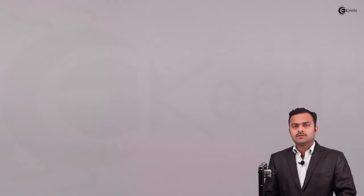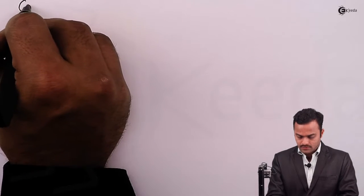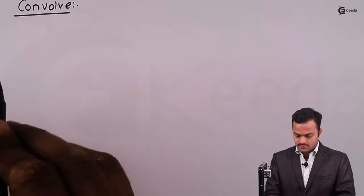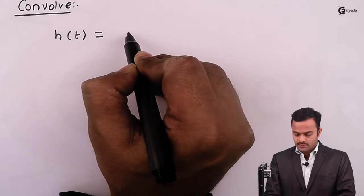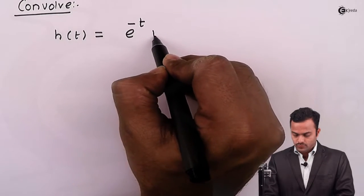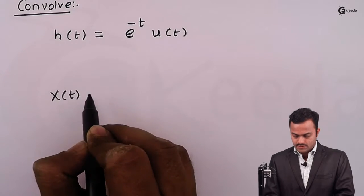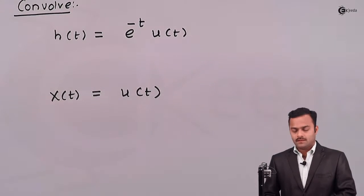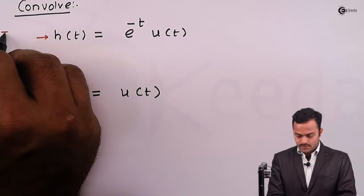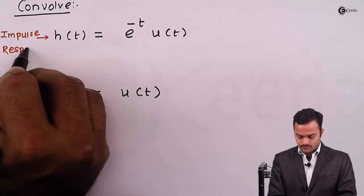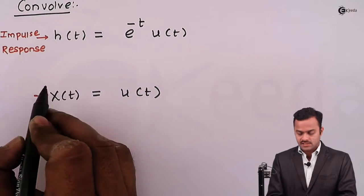Hello students. In this video we are going to see a problem based on continuous time convolution. We have to convolve two signals: the impulse response h(t) = e^(-t)·u(t), and the input signal x(t) = u(t), the unit step function. h(t) is the impulse response and x(t) is the input signal.